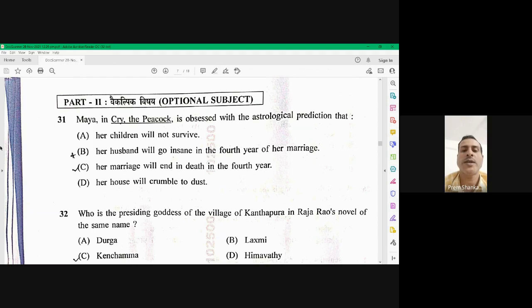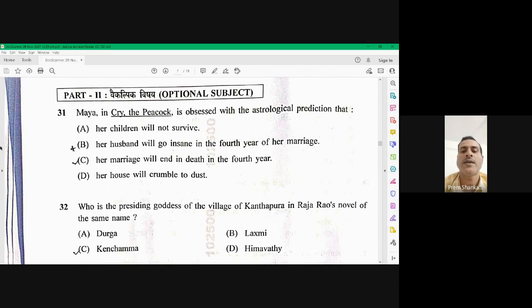So the first question, question number 31 of English literature. Maya in Cry the Peacock is obsessed with astrological prediction that the right option is her marriage will end in death in the fourth year. So an astrologer has made a prediction that on the fourth year of their marriage, she will die. So 31 C is the right option.